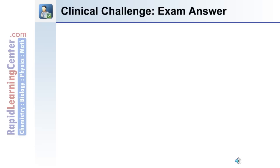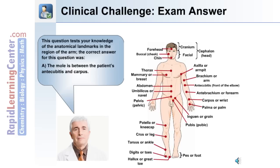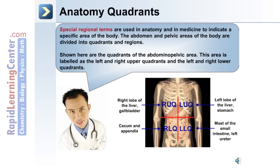Here's the answer. This question tests your knowledge of the anatomical landmarks in the region of the arm. The correct answer for this question was A: the mole is between the patient's antecubitus and carpus.